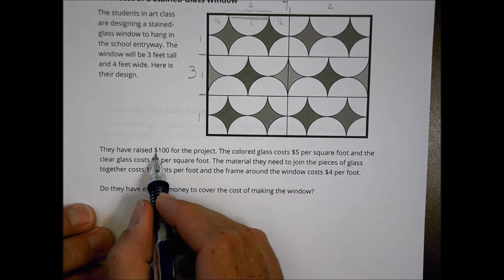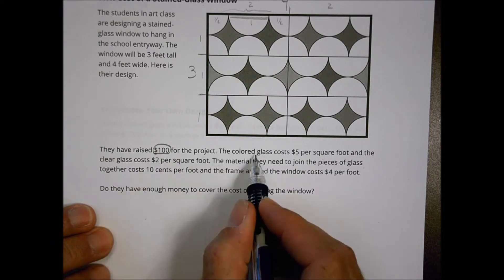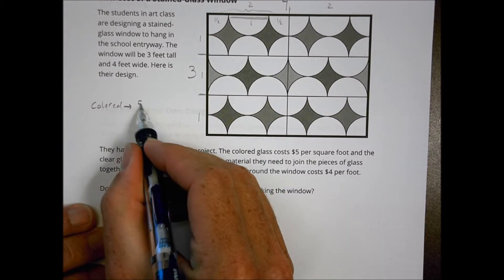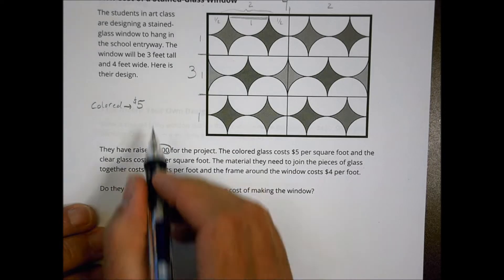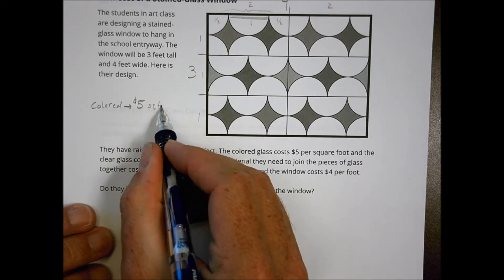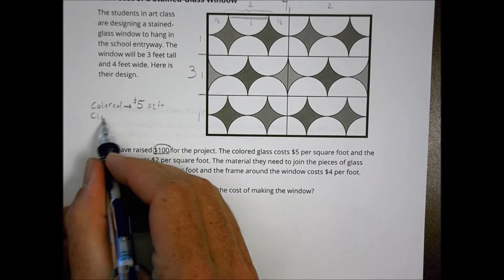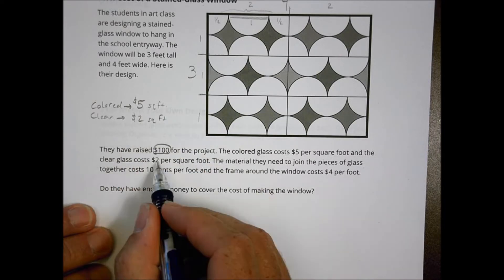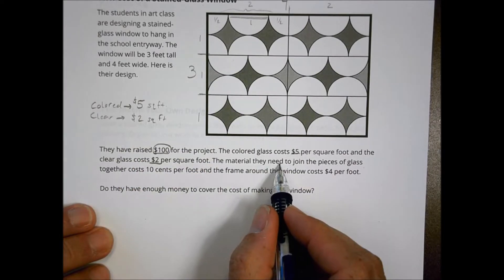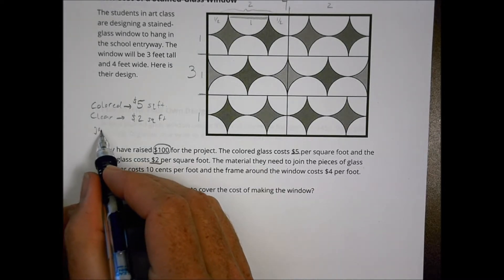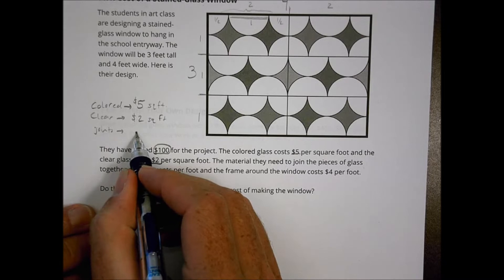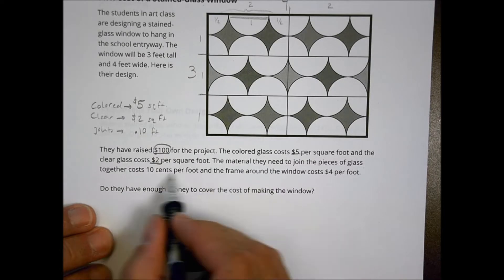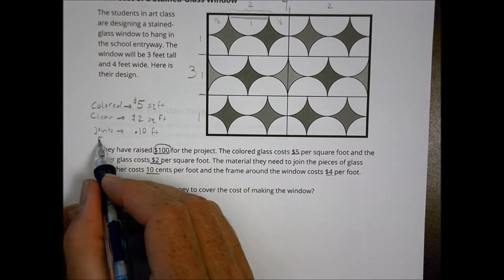It says they've raised $100 for the project, great. The colored glass, so the colored glass is going to cost $5 per square foot. We're talking about area there, square foot. And the clear glass is going to be $2 a square foot. Okay, so $5. The material they need to join the piece of the glass together, so the joint material, the joints, is $0.10 per foot. And the frame is going to be $4 a foot.